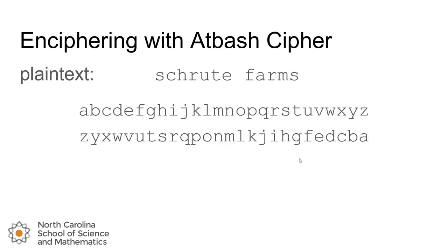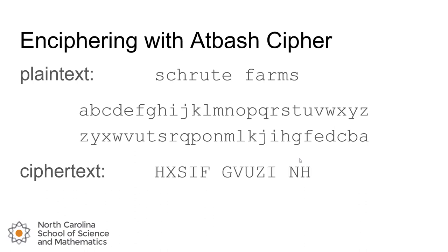We can quickly use this mapping between the plaintext and ciphertext alphabets to create our ciphertext. Since this cipher has only one way to perform it — that is, there is no key — it's not very secure. Once you know the method, you can read any message that's been encrypted using this cipher.